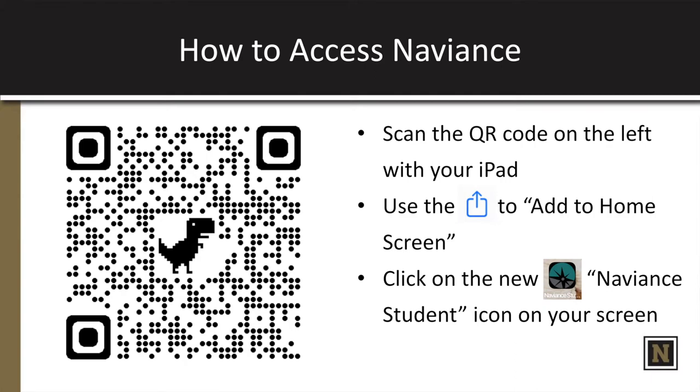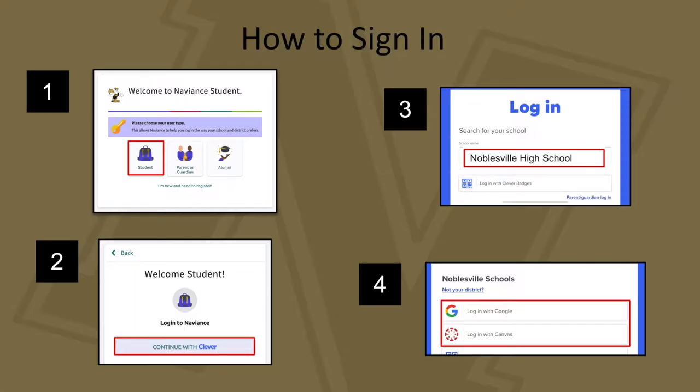You can also access Naviance directly through Clever. To sign in, first click on Student, then click on Continue with Clever. The first time you do this, you might have to type in the school name. Begin by typing in Noblesville and you should see Noblesville High School to select. From there, you can log in by either using your Noblesville school email address or your Canvas account.